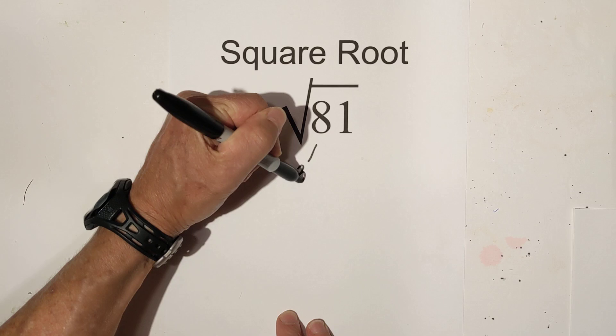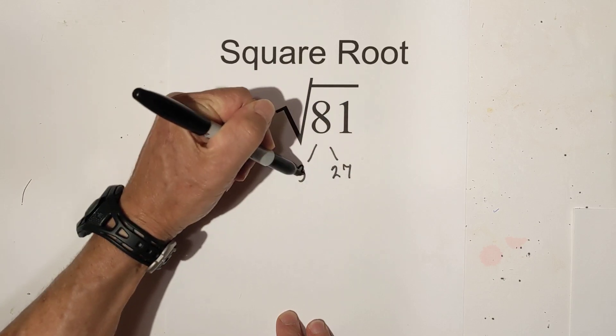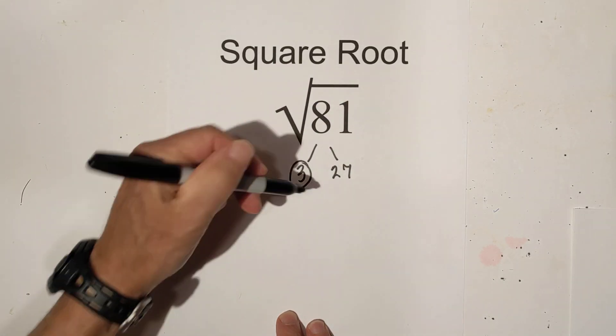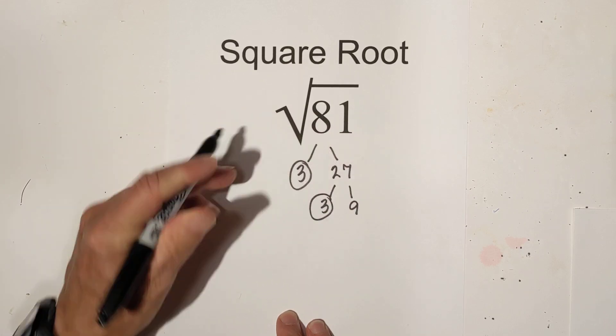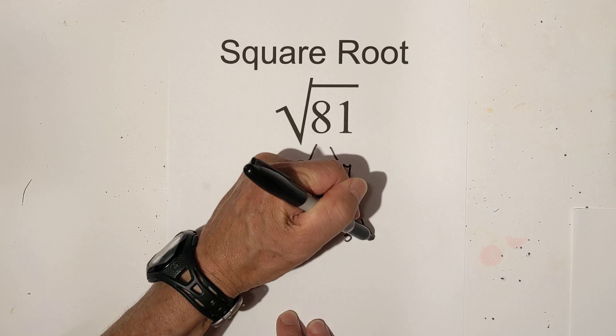We can go 3 times 27. Circle the 3 because it is prime. Then 3 times 9, circle the 3. And then 3 times 3.